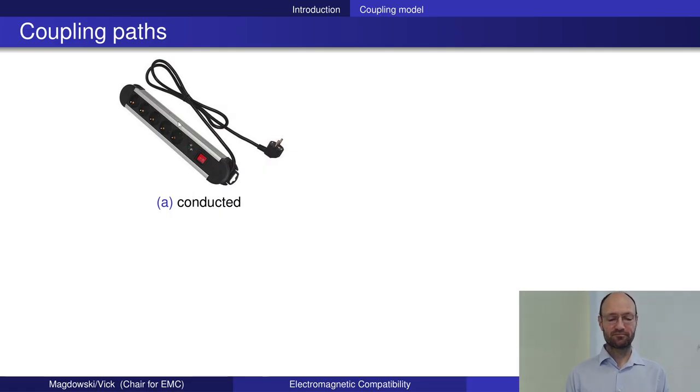Now we can take a look at these coupling paths. At low frequencies, the main coupling path is conducted disturbance or conducted coupling that happens via currents on cables. You could have your washing machine at home—the motor creates disturbances. The washing machine is connected via cable to the power outlet, and your TV set is also connected to the next power outlet. Disturbances from the washing machine via conducted coupling could interfere with your TV set. Because this happens via cables, it's also called galvanic coupling, ohmic coupling, or impedance coupling.